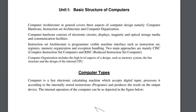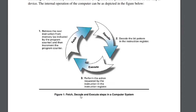The internal operation of the computer can be depicted as the figure below. Here we can see the three steps in a computer system. The first step is to fetch — the computer fetches instructions from memory and then increments the program counter. Next, since the computer does not understand our language, it decodes the bit pattern in the instruction register. Now the computer and the user are communicating, so the computer executes our instruction. For example, if we click a folder, it fetches, decodes, and executes.